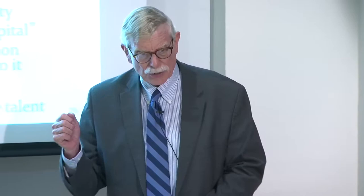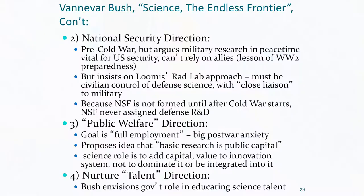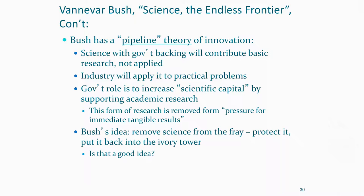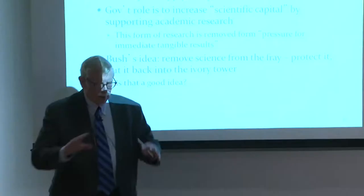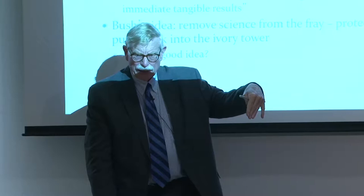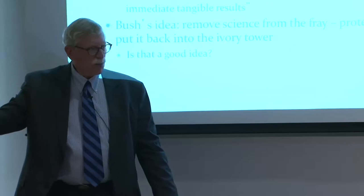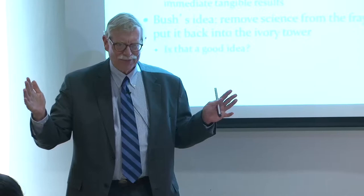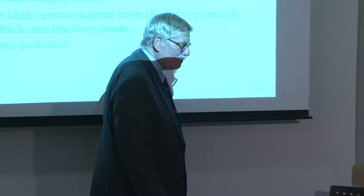The fourth argument is to nurture talent — a Romer-like argument. There's got to be a governmental role in backing up the talent base and educating scientific talent at scale. So Bush has what we can call a pipeline theory of innovation: the government dumps basic research into one end of the pipeline, mysterious things occur in the pipeline, and great technologies, products, and a fabulous economy emerge at the other end.